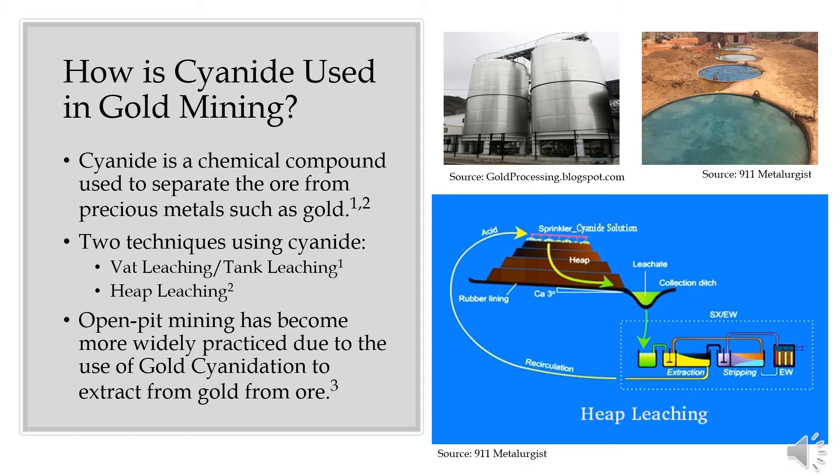First, ore is crushed and heaped into very large mounds. Sprinklers are then installed onto the top of the heap, which dispense sodium cyanide solution directly into the ore. The solution seeps deep into the mound of ore, eventually leaching into the mound and collecting into a pool which has been dug below. The collected solution is then processed to extract the gold.